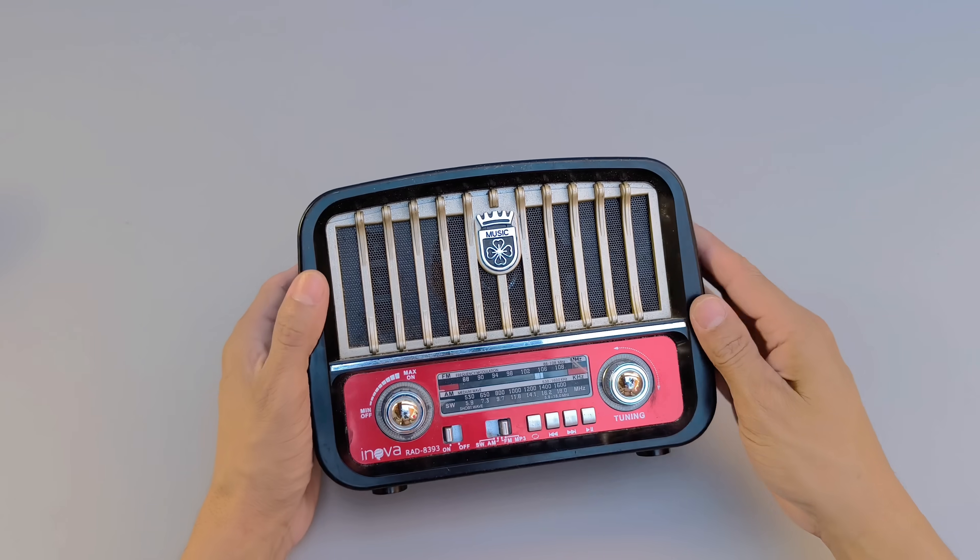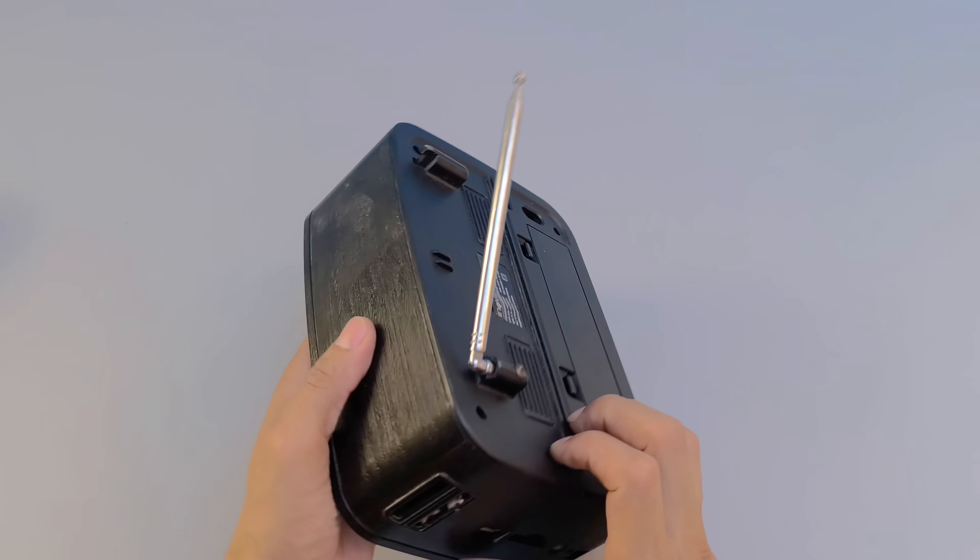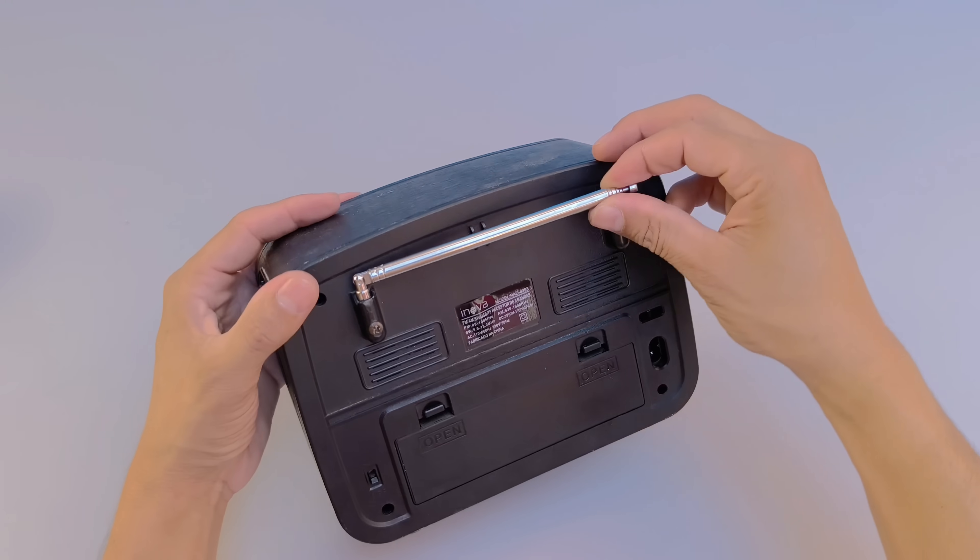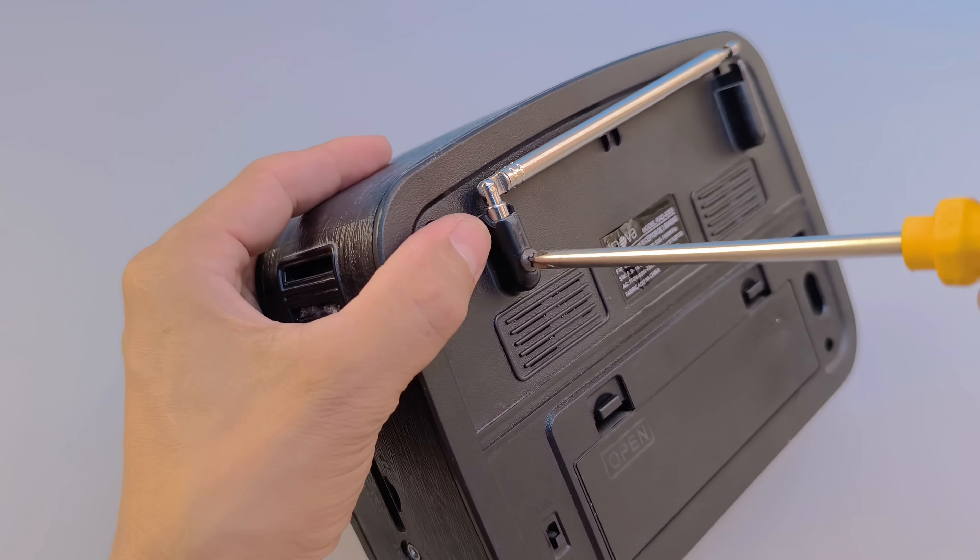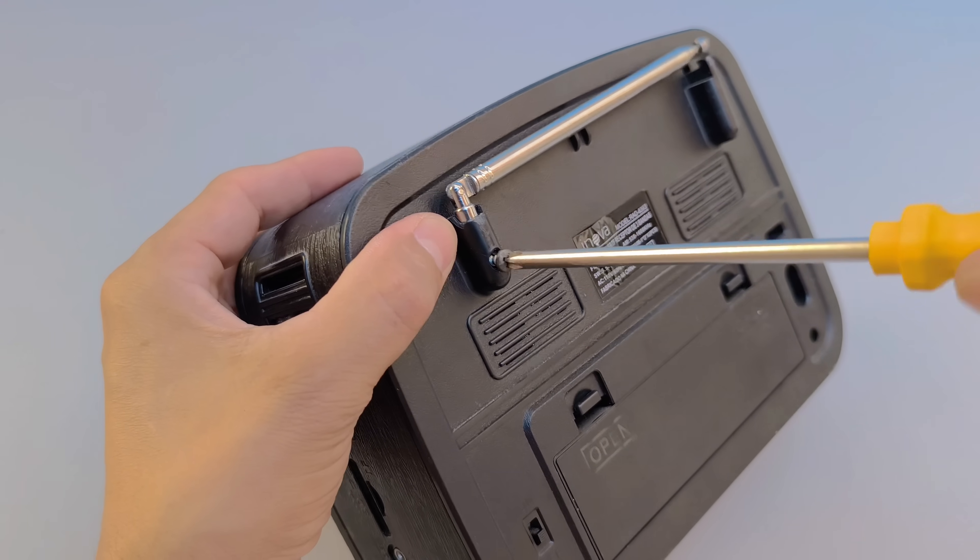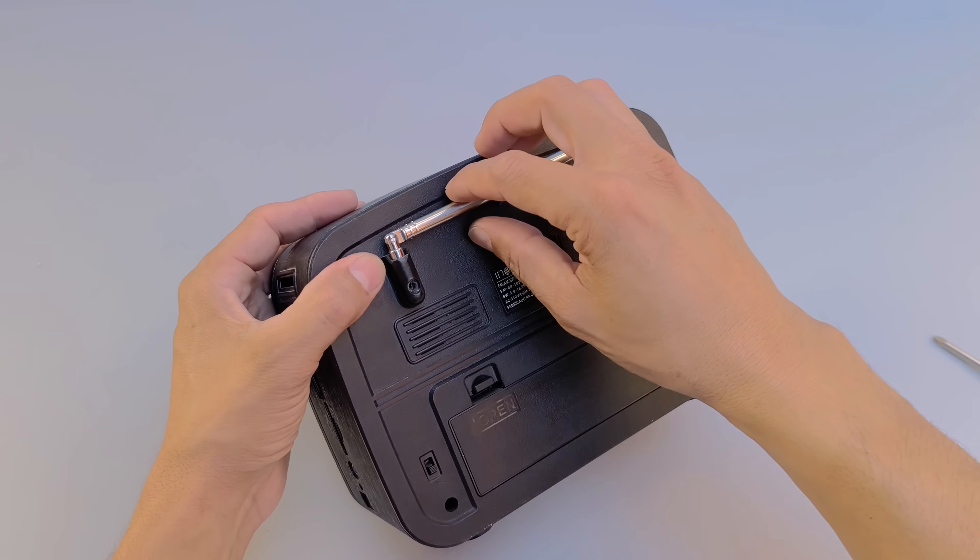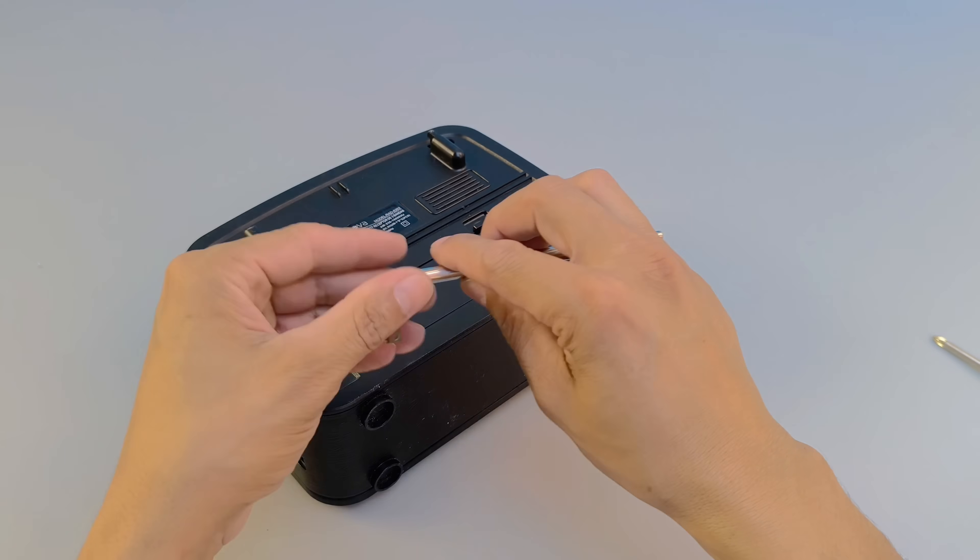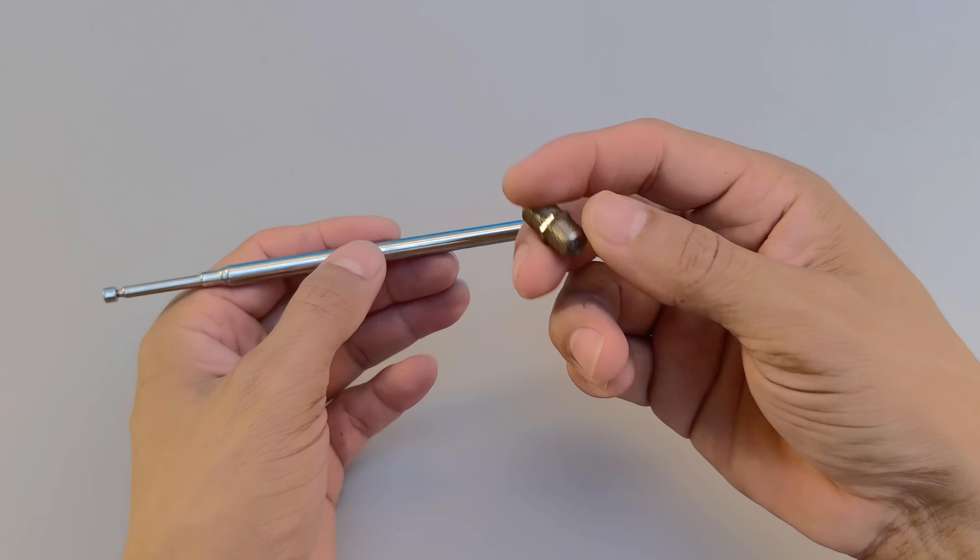Now get ready for the next step, turning this arrangement into part of a signal reception or transmission system. To do this, you will need a telescopic antenna, like the ones that come with old portable radios. Remove the antenna from the radio by unscrewing its base and separating it from the rest of the device. The goal is to take advantage of the signal reception capacity of this antenna by integrating it into your device.